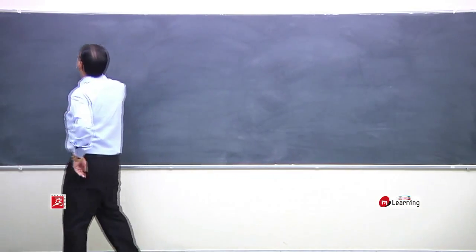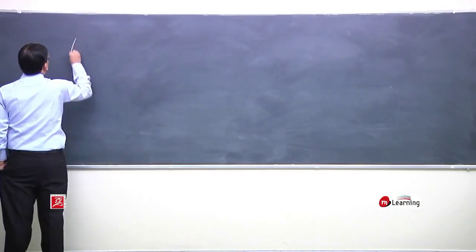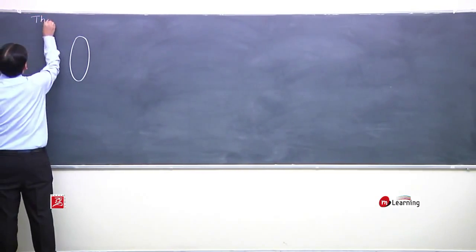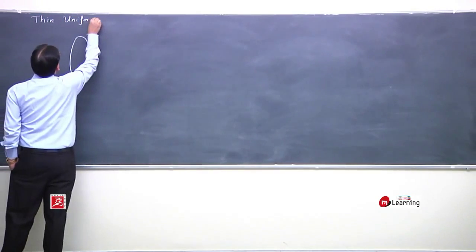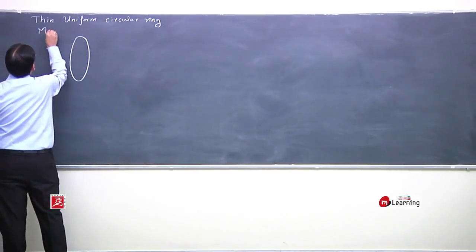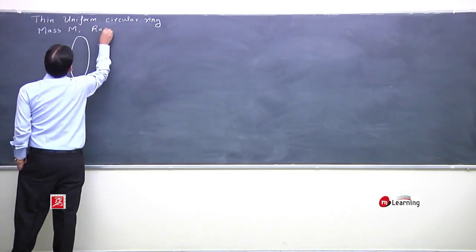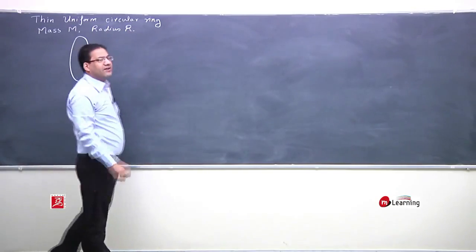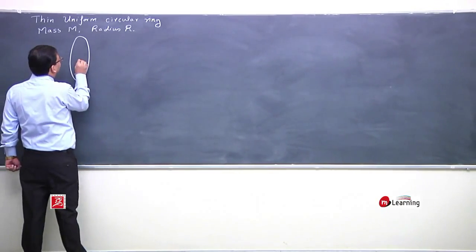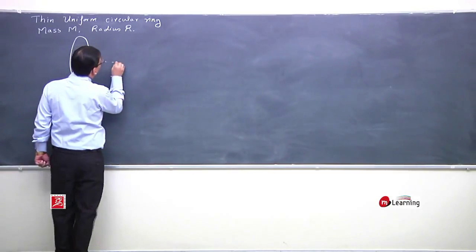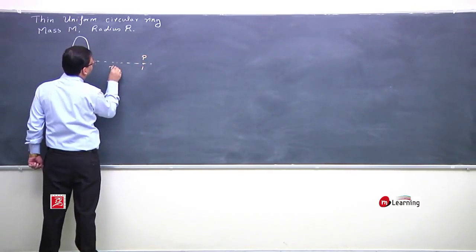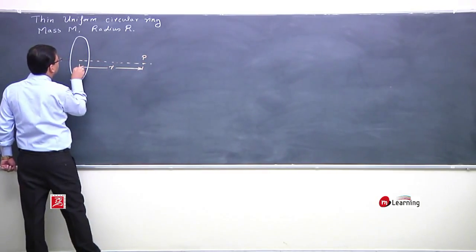For a thin uniform circular ring having mass M and radius r, this is its center, and this is any particle P at a distance of R from its center.